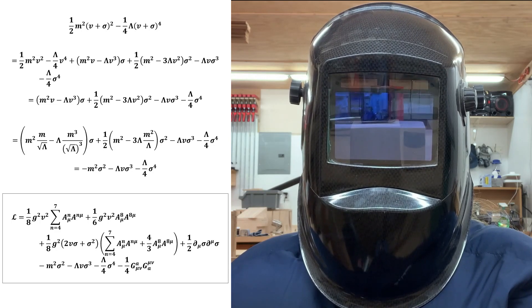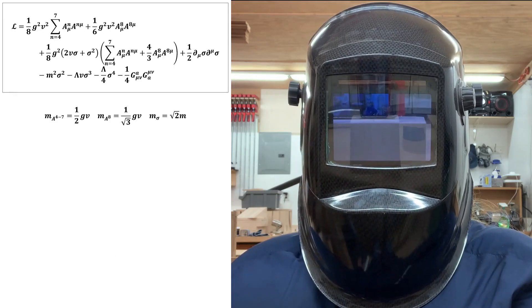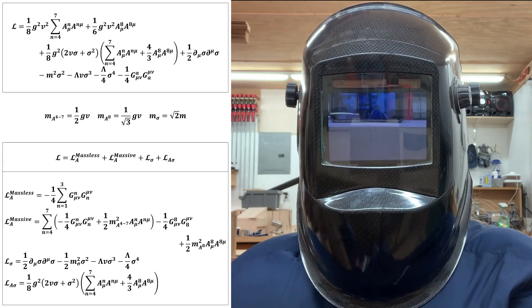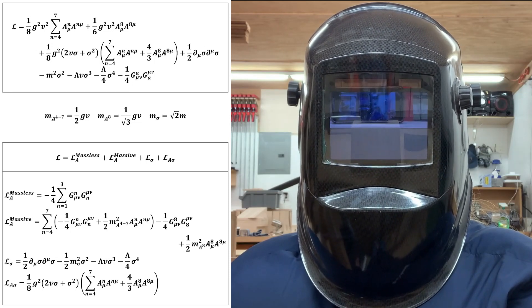It's easier to see what's going on in this Lagrangian density if we make these substitutions and break it up. Now we can clearly see that we have an SU(2) symmetric Lagrangian density with five massive vector boson fields and three massless ones where the three massless ones sustain the residual SU(2) gauge symmetry.